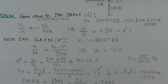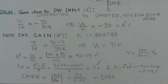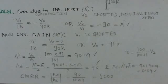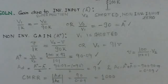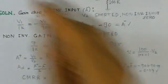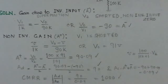The common mode gain A_c is computed as A-plus plus A-minus (inverting plus non-inverting gain), which comes to 0.09. To find the CMRR, these gains are divided: 90 over 0.09, which comes to approximately 1000. Therefore, option C is the correct answer for this problem.